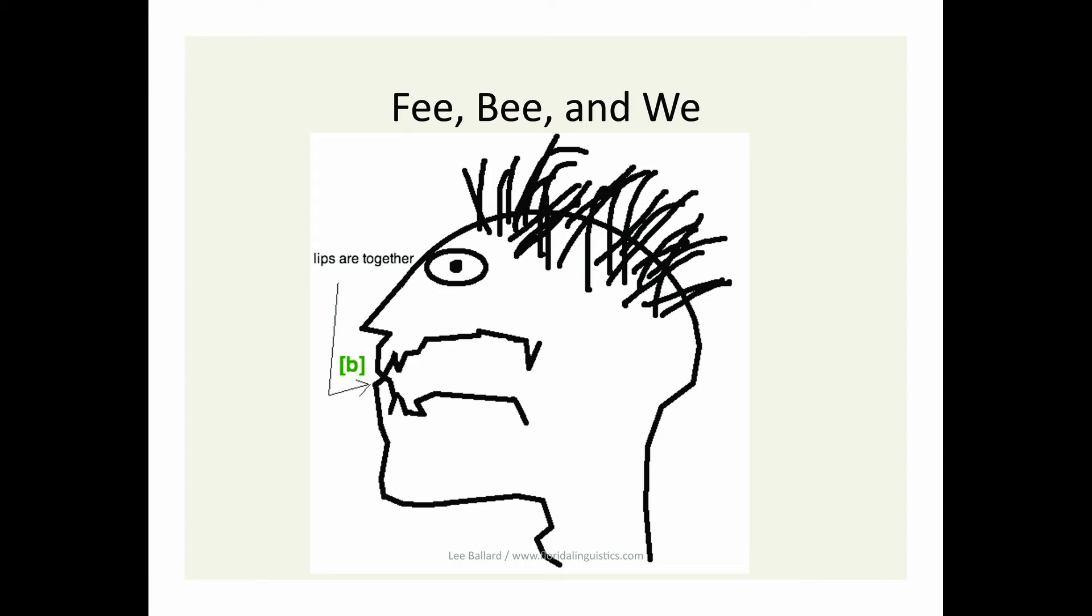Let's have a look at Crazy Steve saying we now. With we, the consonant is similar to phi in that there are two articulators involved, but they do not share equal parts of the same role. To pronounce we, Crazy Steve's lips move some, and this forms the main part of the sound. Sounds that are produced by moving articulators are called glides.